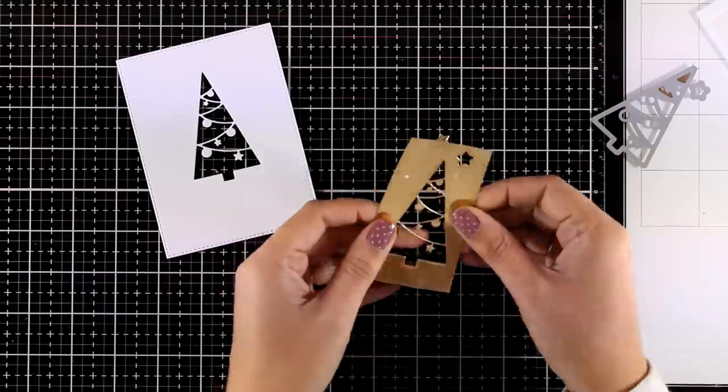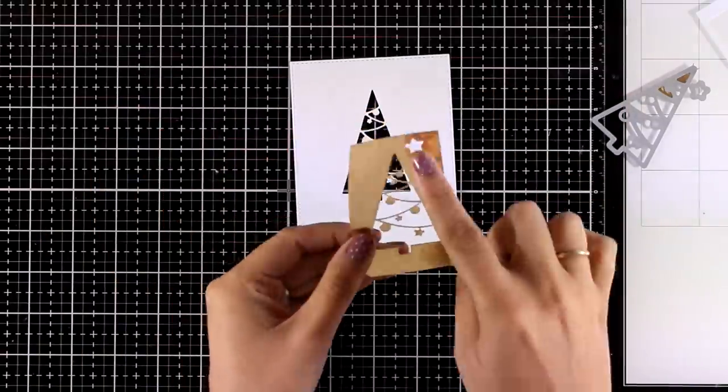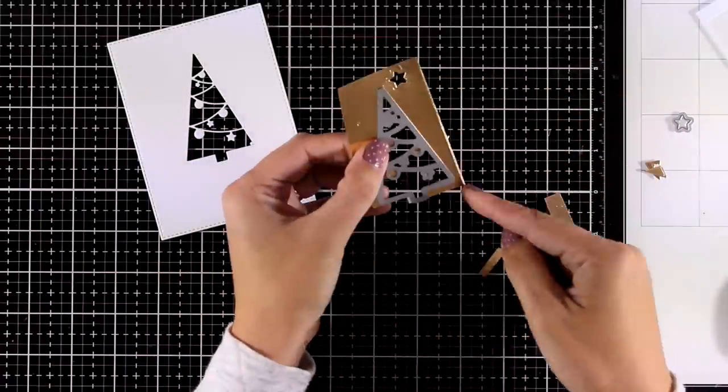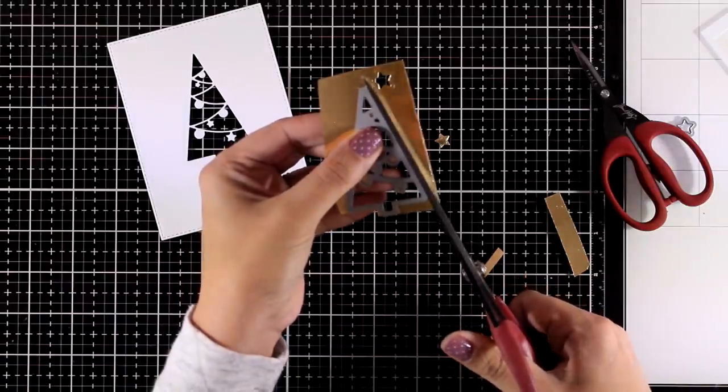To embellish my tree I decided to cut out the same die using gold cardstock and now with my scissors I am going to go all around it and cut out a little frame. So this way I can place the frame on top of my card and make it a little bit shiny.